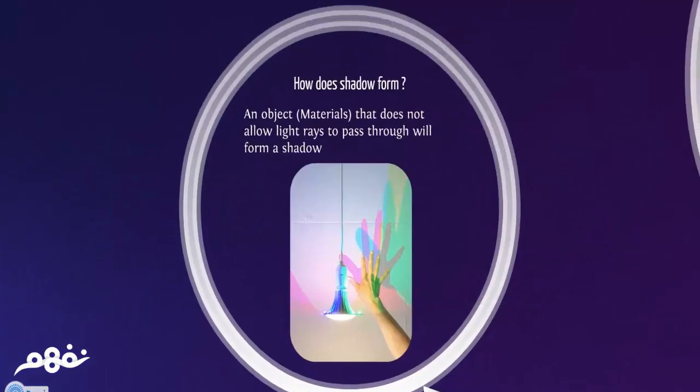So how does shadow form? An object that does not allow light rays to pass through will form a shadow. Let's try this. You can try to put your hand near a light bulb and you will see your hand's shadow. Now try to put your hand closer to the light bulb and you will see that the shadow becomes bigger. Conclusion from this is that light travels in a straight line.